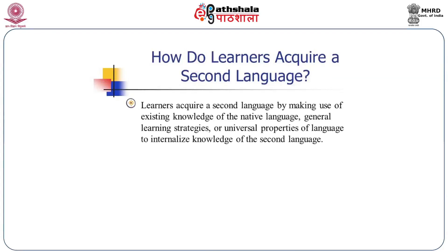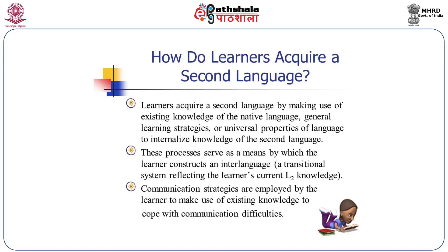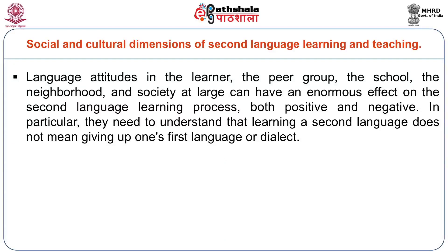How do learners acquire the second language in such a social situation? Learners acquire a second language by making use of existing knowledge of the native language, general learning strategies, or universal properties of language to internalize knowledge of the second language. These processes serve as a means by which the learner constructs an interlanguage; communication strategies are employed to make use of existing knowledge to cope with communication difficulties. Social, cultural dimensions of second language learning and teaching must be considered — language attitudes in the learner, peer group, school, neighborhood, and society at large can have an enormous positive or negative effect. Learning a second language does not mean giving up one's first language or dialect.